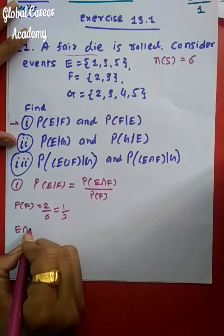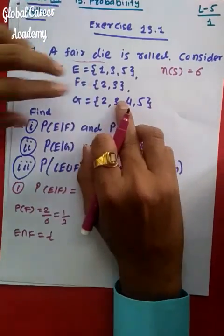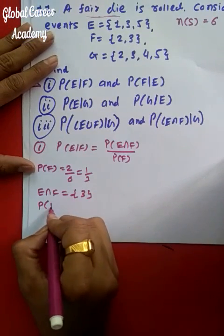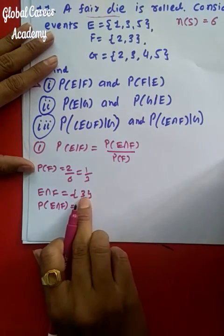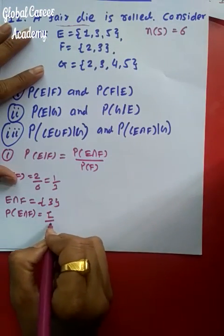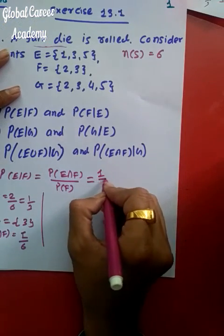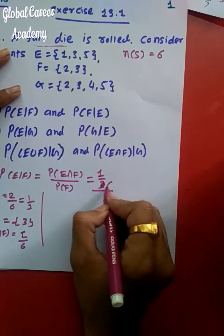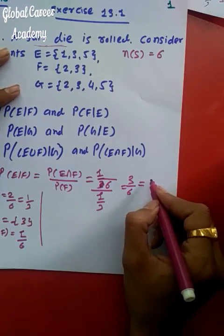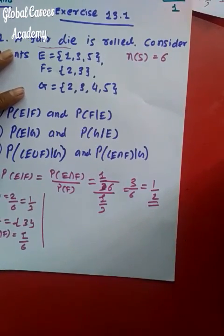Now for E∩F, we write down the sample space. Only 3 is common in E∩F, so P(E∩F) = 1/6. Therefore, P(E|F) = (1/6) ÷ (1/3) = 3/6 = 1/2. So the first part is complete.